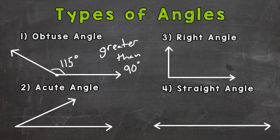Number two, we have an acute angle, which means it is less than 90 degrees. Any angle less than 90 degrees is an acute angle.